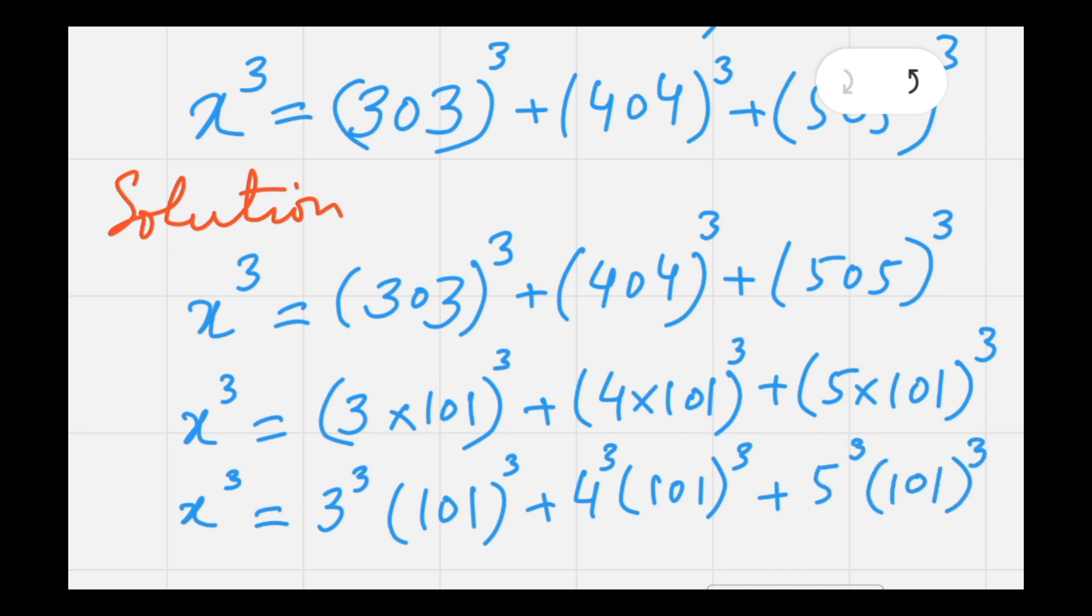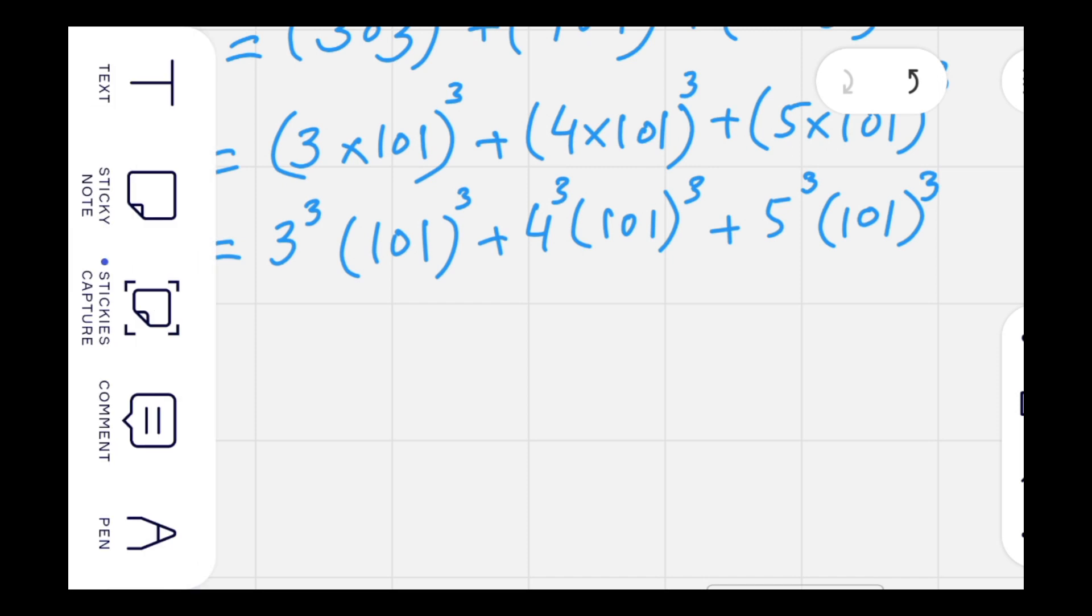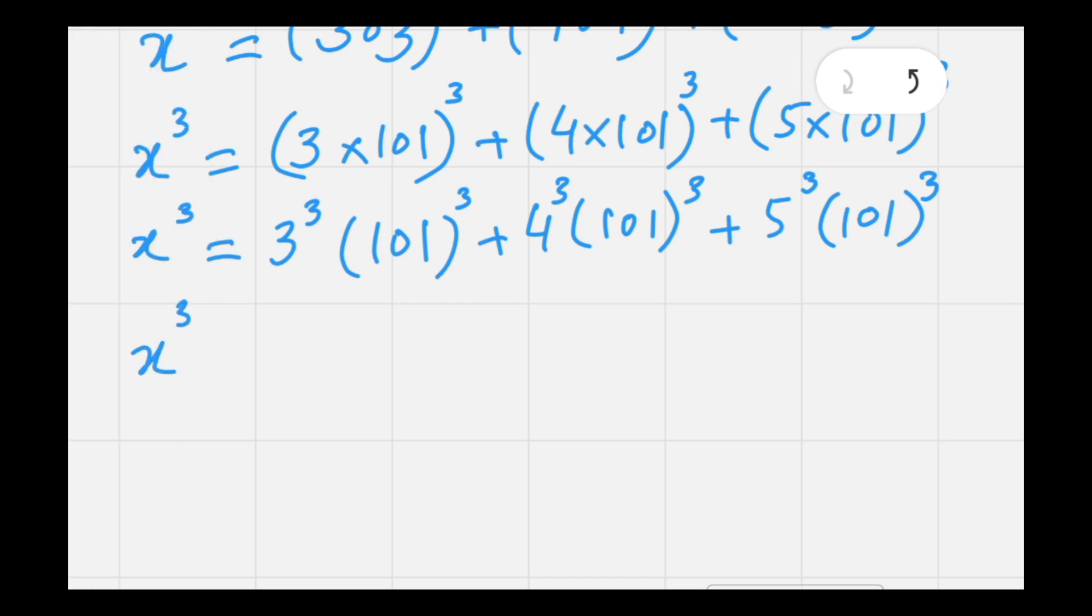If you notice on the right side, 101 cubed is common, so we can take it as a common factor and the remaining terms are 3 cubed plus 4 cubed plus 5 cubed. So x cubed equals 101 cubed times the sum.